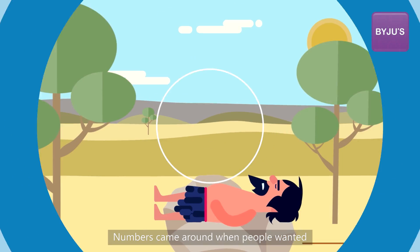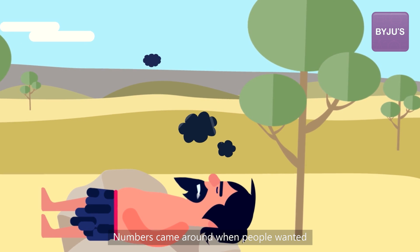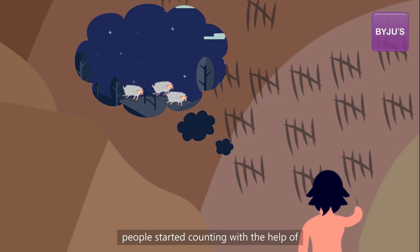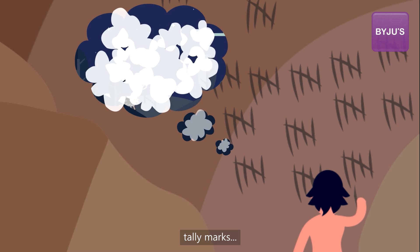Why numbers? Numbers came around when people wanted to count, say sheep. During the Paleolithic era, people started counting with the help of tally marks.